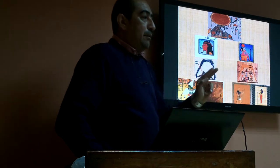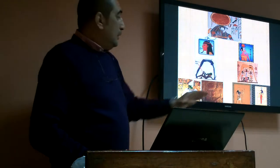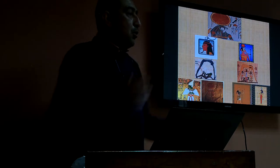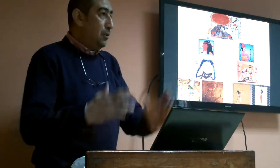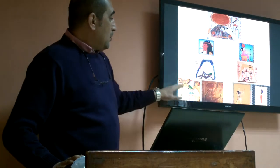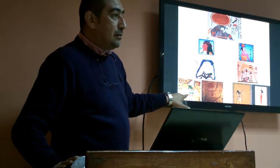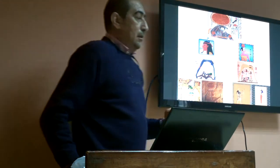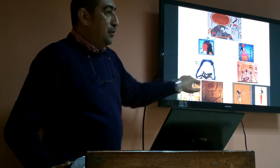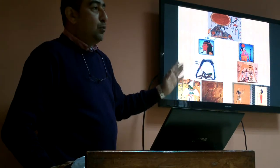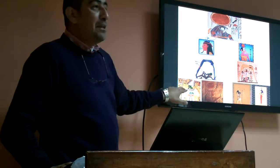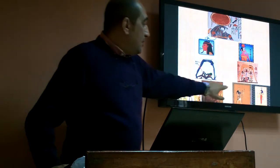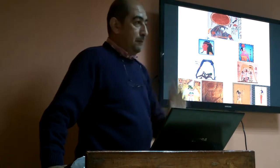This splitting of Nut and Geb — we can call it the Big Bang in modern terms. They were married and had four children: Osiris, Isis, Set, and Nephthys. Because they were the first four semi-gods or semi-humans, they got married to each other, forming the first two couples — Osiris married Isis, and Set married Nephthys.